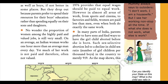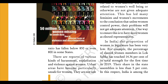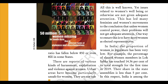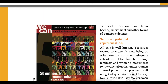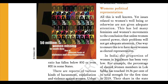In many parts of India, parents prefer to have sons and find ways to have the girl child aborted before she is born. Such sex-selective abortion led to a decline in the child sex ratio — the number of girl children per thousand boys — in the country to merely 919. As the map shows, this ratio has fallen below 850 or even 800 in some states. There are reports of various kinds of harassments, exploitation and violence against women. Urban areas have become particularly unsafe for women. They are not safe even within their own home, from beating, harassment and other forms of domestic violence.